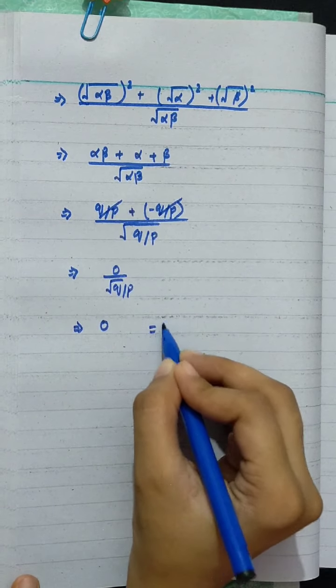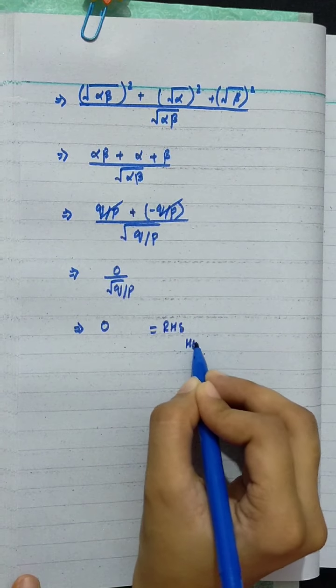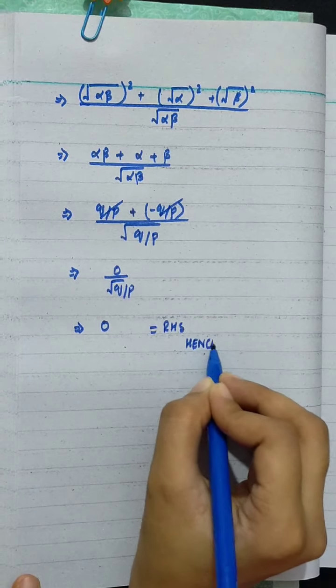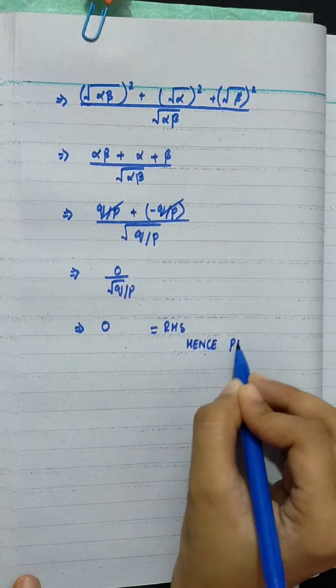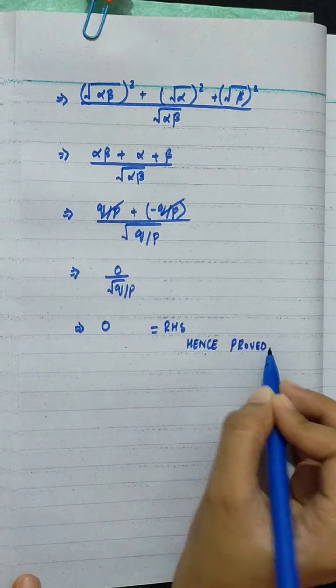The numerator equals zero, so the entire expression is 0 divided by √(q/p), which equals zero — the right-hand side. Hence proved.